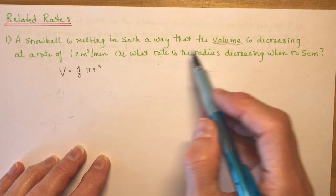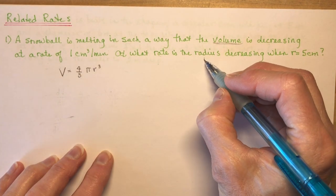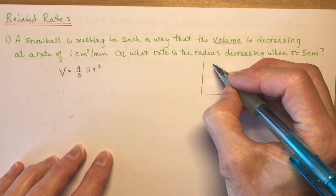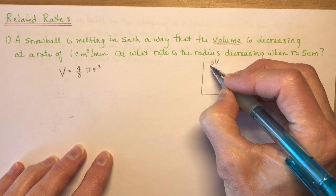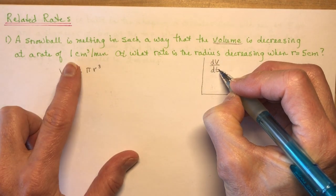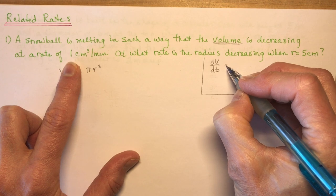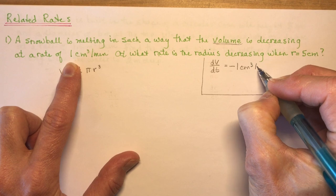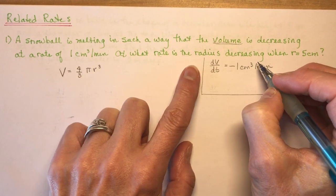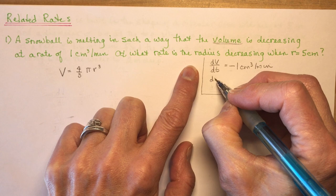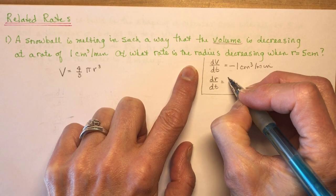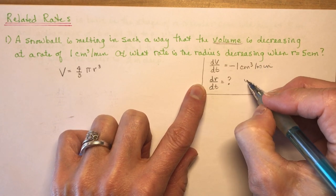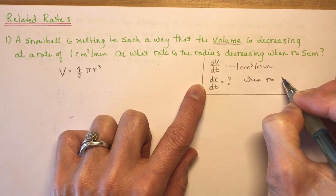We need to go back and look at the information we've been given — I like to put it off to the side. So we have dv/dt, the rate of change of the volume, is one centimeter cubed per minute, and since it's decreasing we make it negative one centimeter cubed per minute. At what rate is the radius changing? So I'm trying to find dr/dt when r is equal to five centimeters.